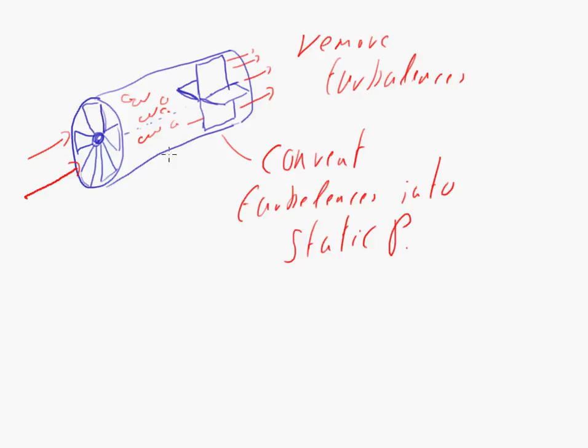Now, there are two kinds of guide vanes. One are at the outlet, like in this case. Outlet means that after the air leaves the impeller, it hits the guide vanes, and that's the outlet.